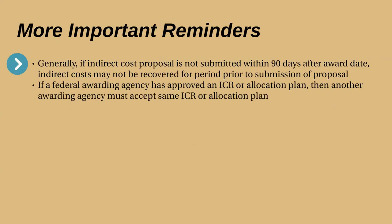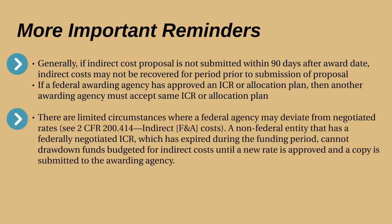Regardless of what ICR method or allocation plan you choose, you should be aware of the following. Generally, if an indirect cost proposal is not submitted within 90 days after the award date, indirect costs may not be recovered for the period prior to the submission of the proposal. If a federal awarding agency has an approved ICR or allocation plan, then another awarding agency must accept the same ICR or allocation plan, provided the rate or plan is current and based on allocation methods in accordance with OMB uniform guidance. There are limited circumstances where a federal agency may deviate from negotiated rates, as discussed in 2 CFR 200.414. A non-federal entity whose federally negotiated ICR has expired during the funding period cannot draw down funds budgeted for indirect costs until a new rate is approved and submitted to the awarding agency.